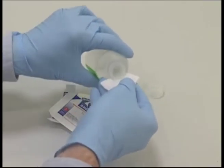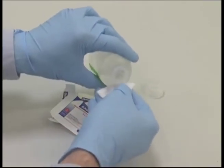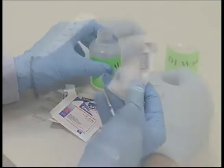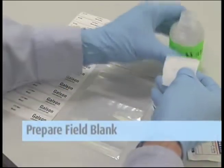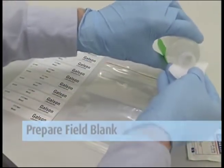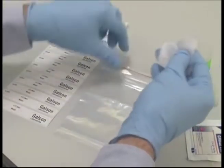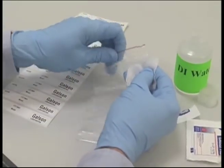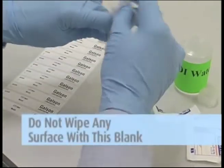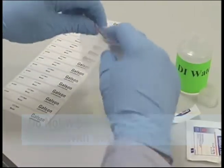The white material should be almost dripping. Now prepare the field blanks for each chemical that will be analyzed. Do this by simply taking a new clean wipe, wetting it with the DI water, and then placing it in a ziplock bag. Do not wipe any surface with this blank.